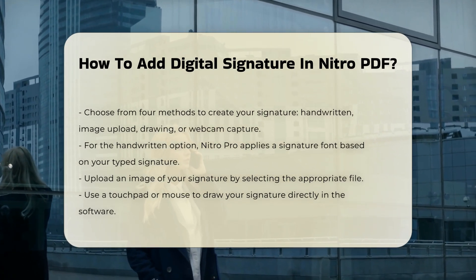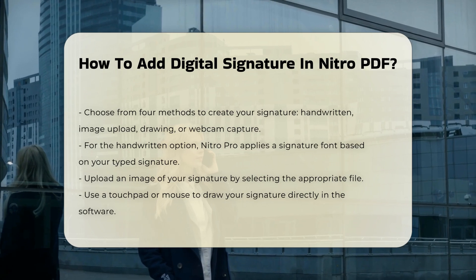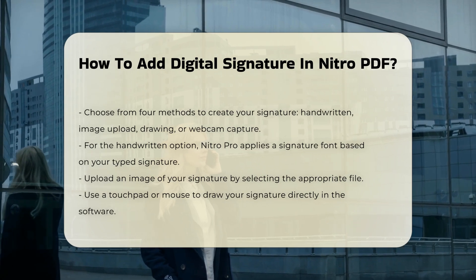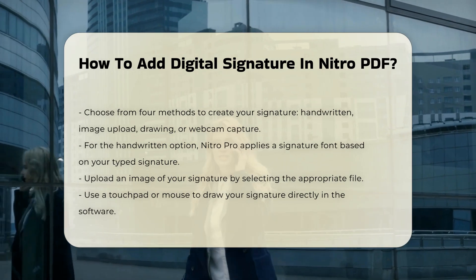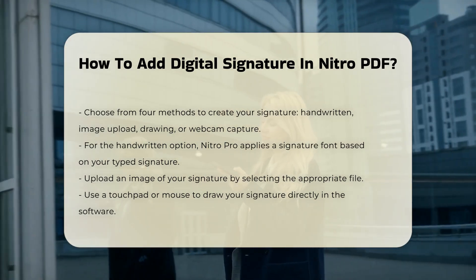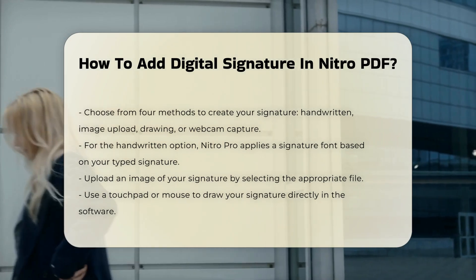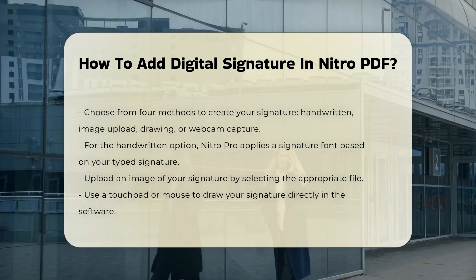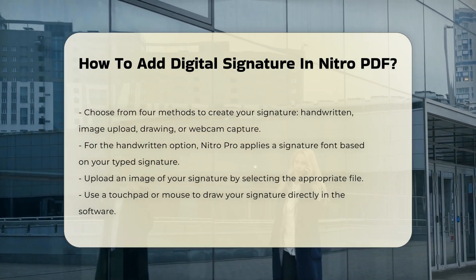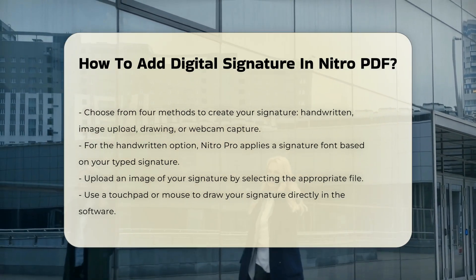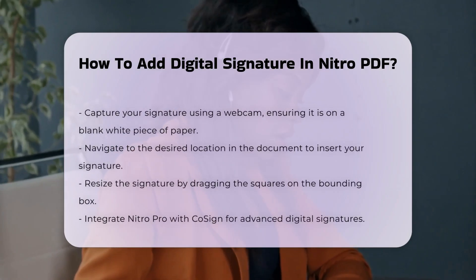For the Handwritten option, you type your signature and Nitro Pro applies a signature font. For uploading an image, you select the image file of your signature. The drawing option allows you to use a touchpad or mouse to create your signature, while the webcam option involves holding up your signature to the camera, ideally on a blank white piece of paper.